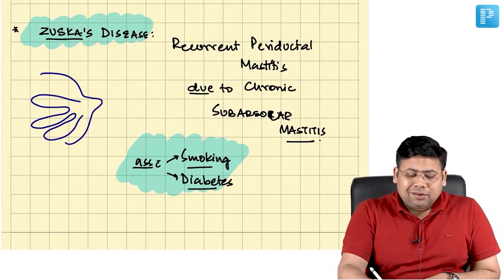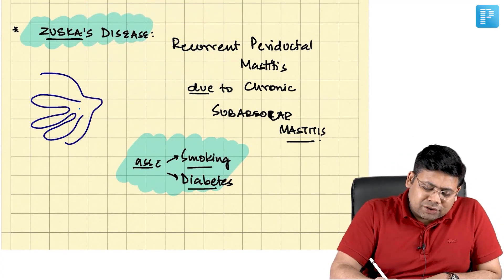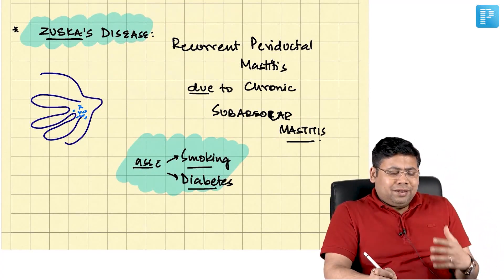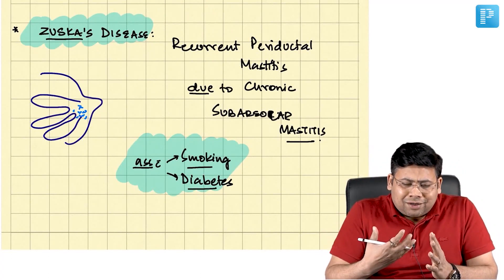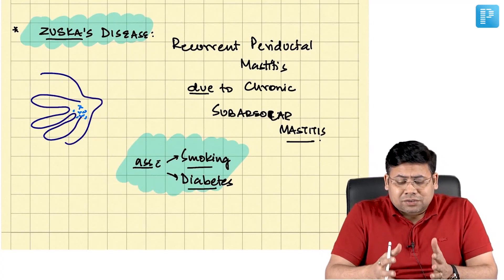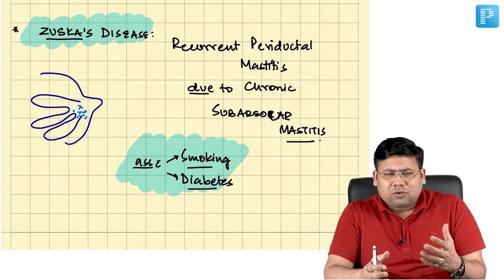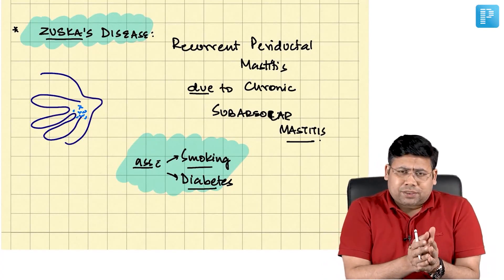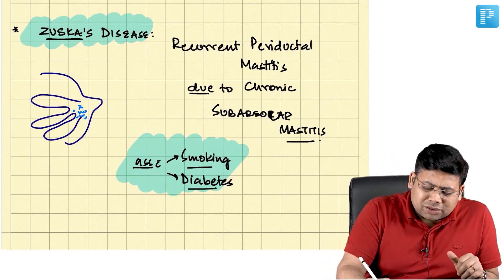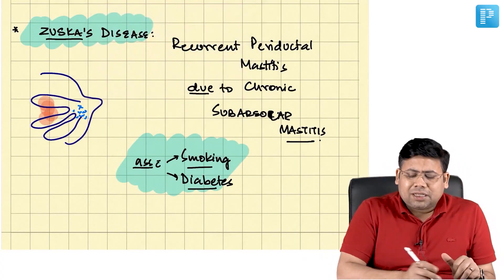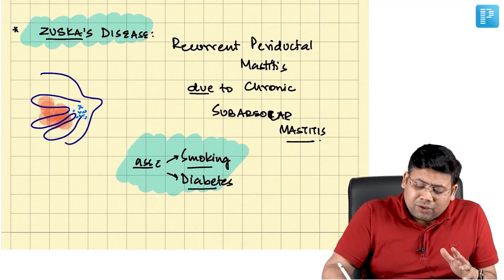Due to chronic smoking there is always a state of pan-ductal inflammation with some collection. This lady had recurrent mastitis and was taking over-the-counter antibiotics, never realizing the real cause was smoking. Over time, repeated use of antibiotics converts the abscess into a cold abscess. Necrosis is an excellent culture media, causing inflammation again and again — resulting in recurrent periductal mastitis due to chronic subareolar abscess.